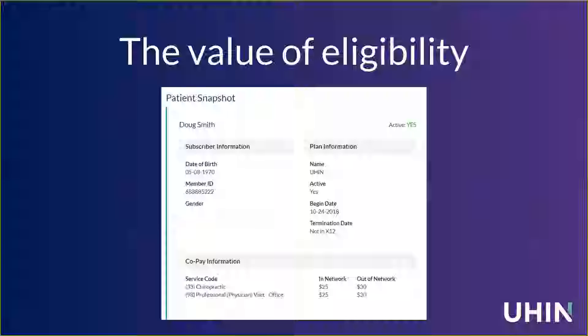When you get the response, it will list the demographics so you can compare them to your records or to what the patient and subscriber have told you. If there's a discrepancy, this gives you a head start in figuring it out before the service is rendered. For instance, if the date of birth was different from what the payer sent back versus what you had in your system, you could update your records or check with the patient. Also watch for subscriber and dependent mismatches — those are important to get right before submitting the claim.